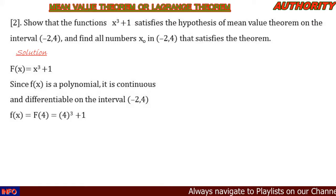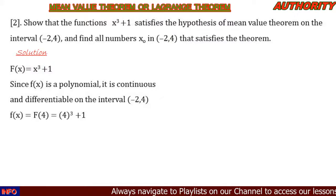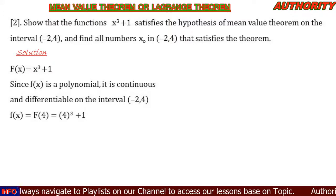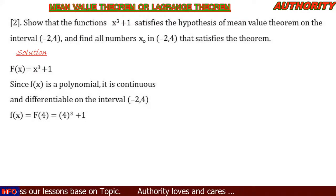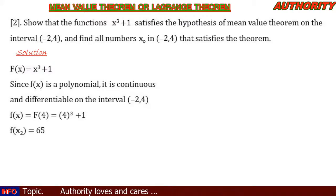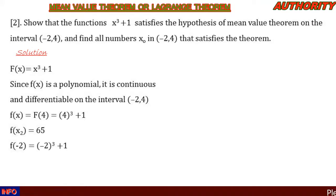On the interval [-2, 4], four gives us x₂ and minus two gives us x₁. So let's plug in: f(x₂) = f(4) = 4³ + 1 = 64 + 1 = 65. So f(x₂) = 65.